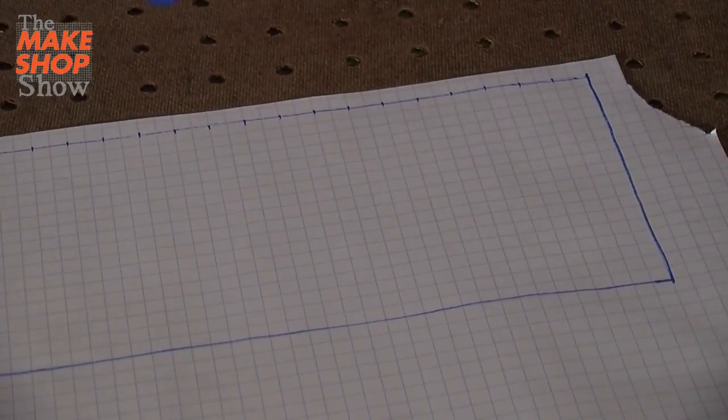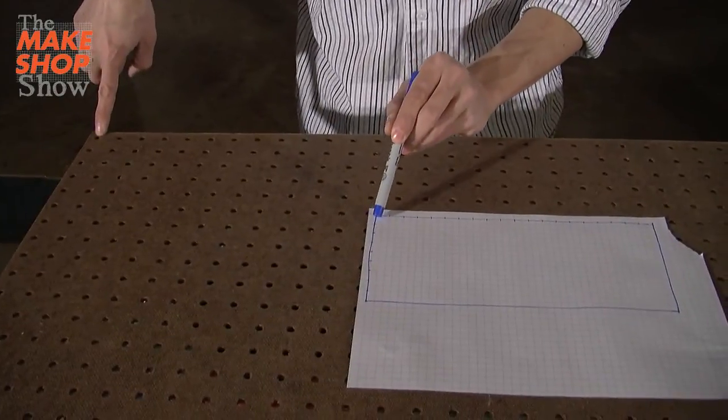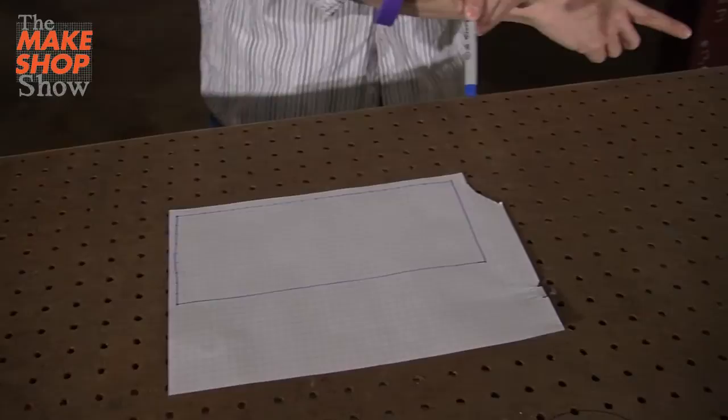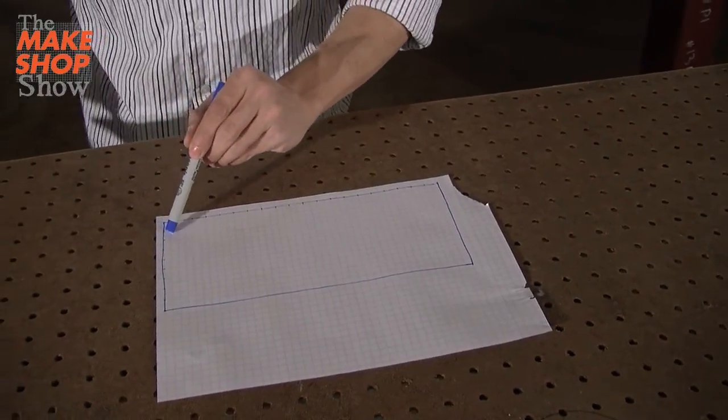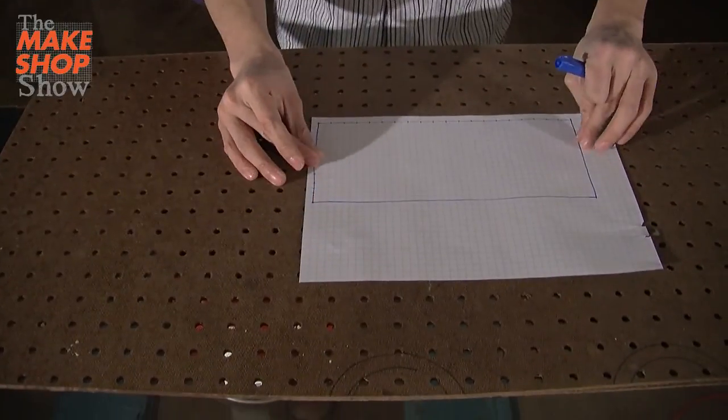We're going to pretend that this first hole here is this first spot there and on down the line in both directions. So we've sort of got a little map of what we're going to make.